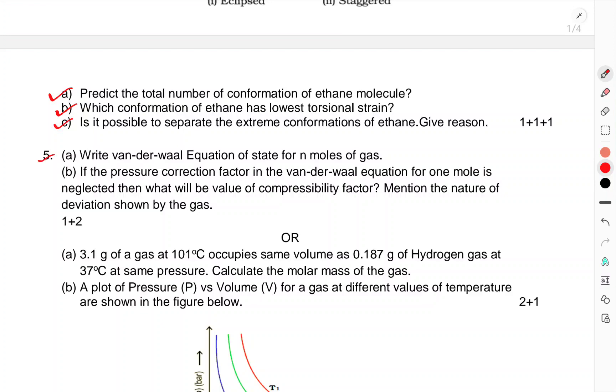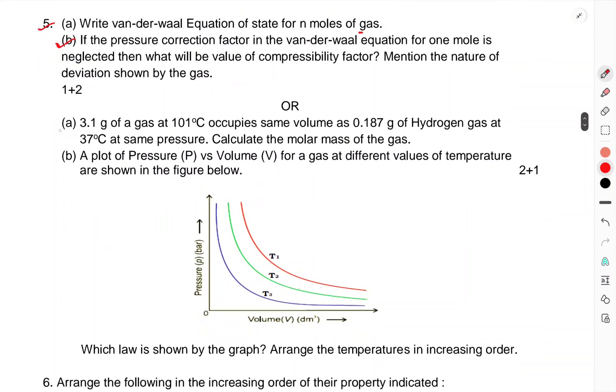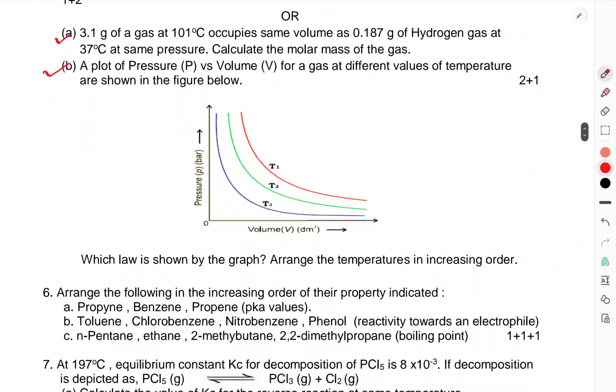Write the van der Waals equation of state for n moles of gas. If the pressure correction factor in van der Waals equation for 1 mole is neglected, then what will be the value of compressibility factor? Mention the nature of deviations shown by the gas. 3.1 g of gas at 101°C occupies the same volume as 0.187 g hydrogen gas at 37 degree Celsius at the same pressure. Calculate the molar mass of the gas. A plot of pressure P vs volume V of gas at different values of temperature is shown in the figure below.